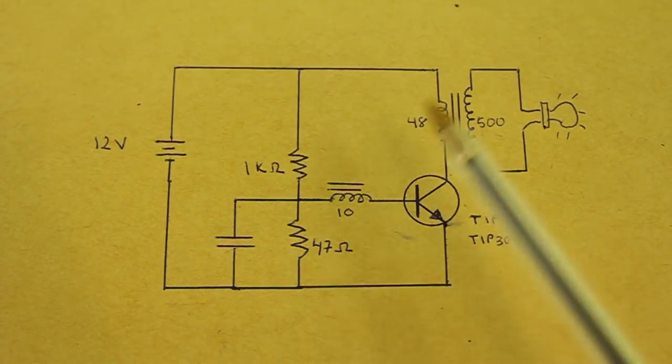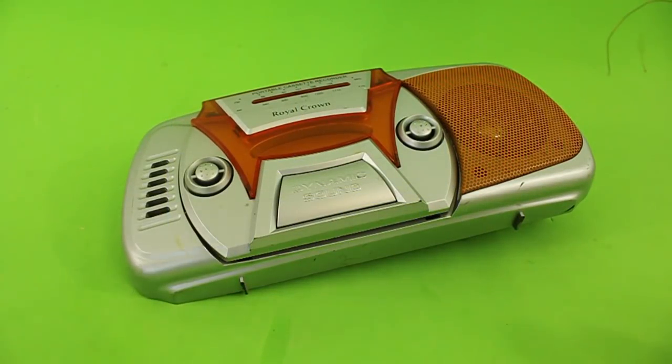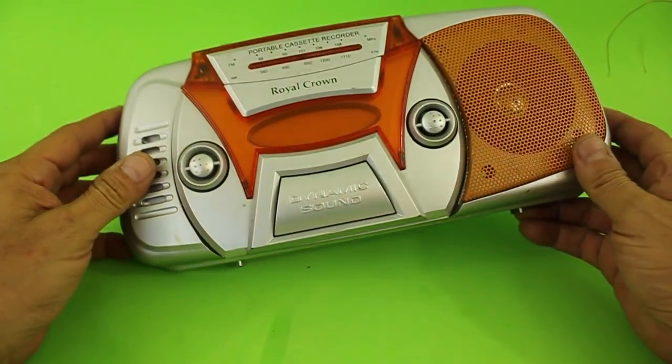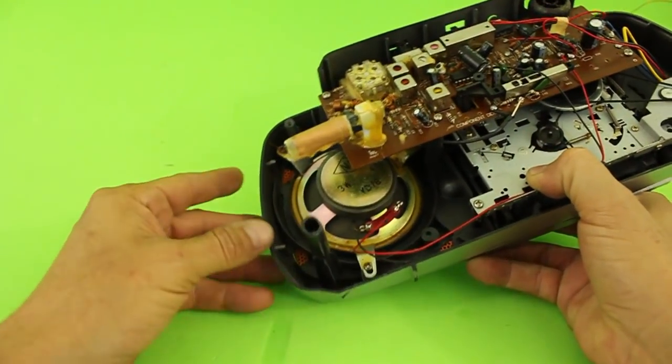We need a ferrite core for it. The ferrite core can be obtained from an old AM radio. It is this part that forms the antenna.